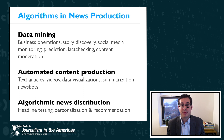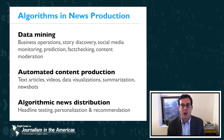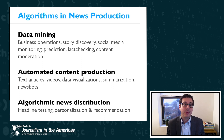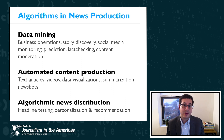Algorithms can also be used to automatically produce content, like writing text articles or producing videos or data visualizations. There are algorithms that can help summarize content — taking a large article and crunching it down into a shorter representation. Algorithms can also drive news bots and automatically produce content that gets shared on social media channels. Additionally, algorithms can aid in news distribution, such as headline testing to optimize click-through rates, and personalizing and recommending content to enhance relevance and engagement.